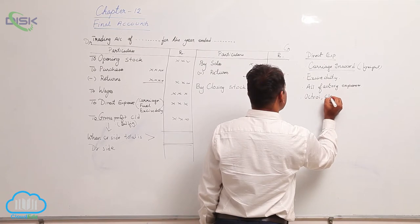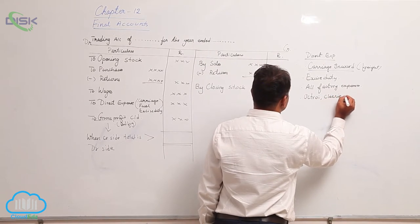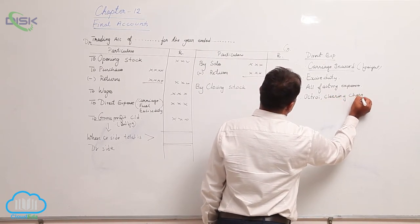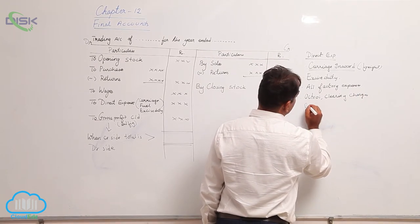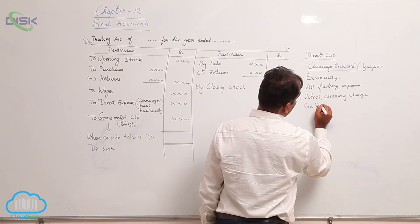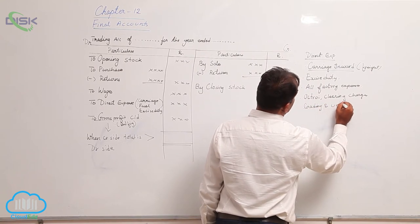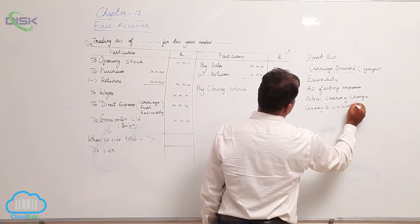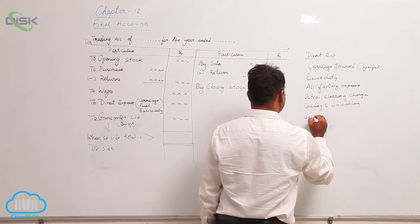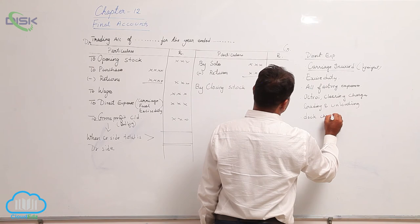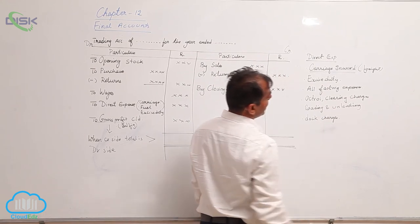Then you have clearing charges, then you have loading and unloading charges, then you have your dock charges. So, these are the examples of your direct expenses.